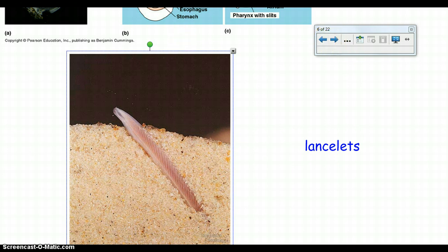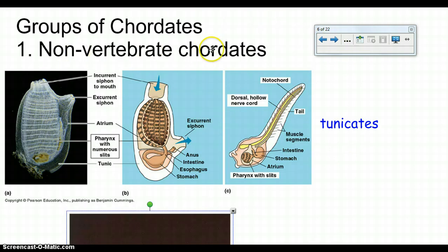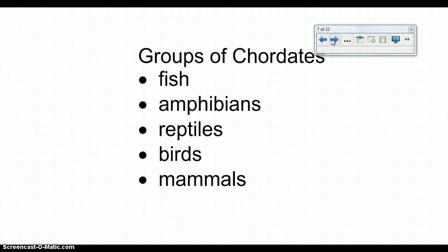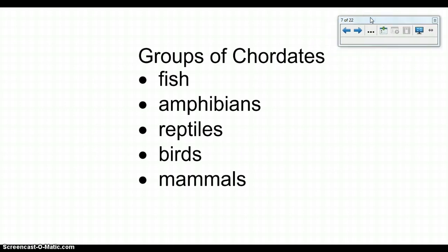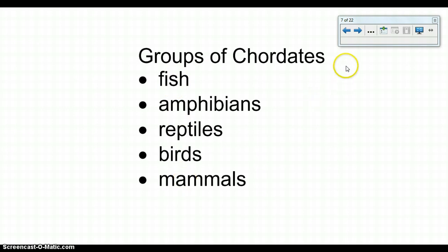The other group of chordates — vertebrates — you'll be very familiar with. There are five groups: fish, amphibians, reptiles, birds, and mammals. All of these animals have their notochord turn into a spinal column.